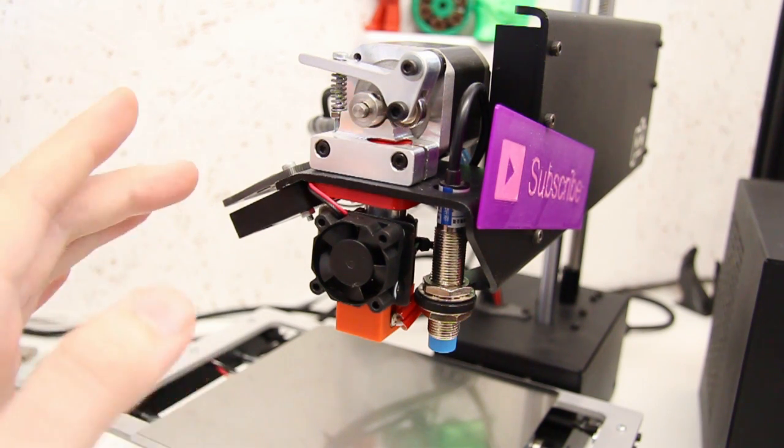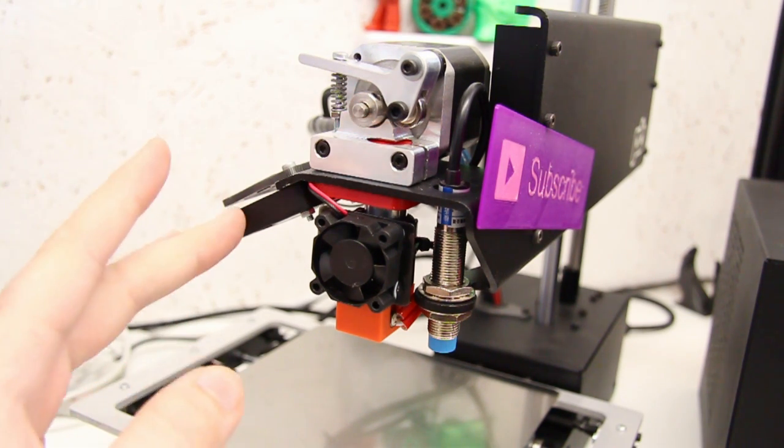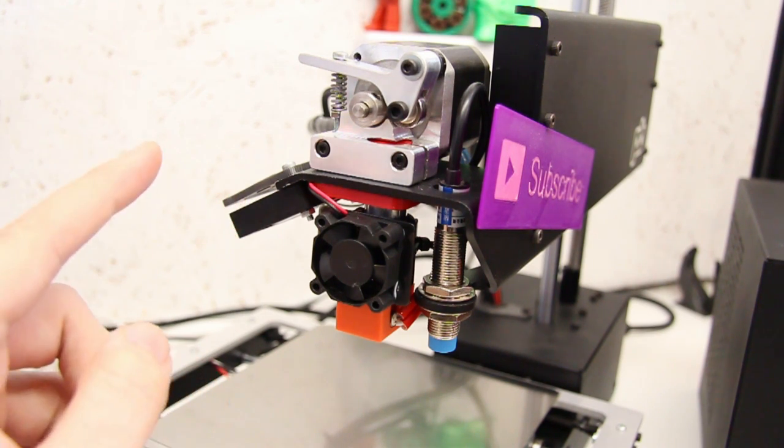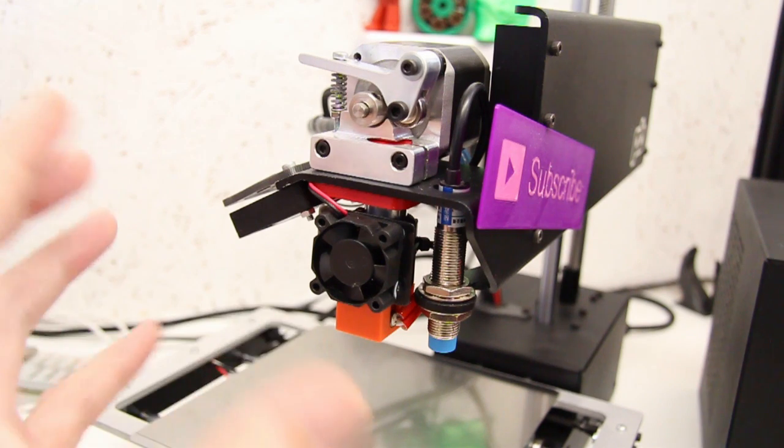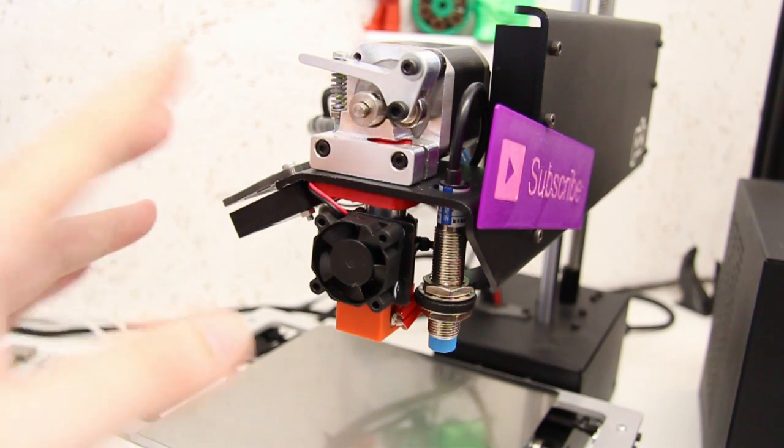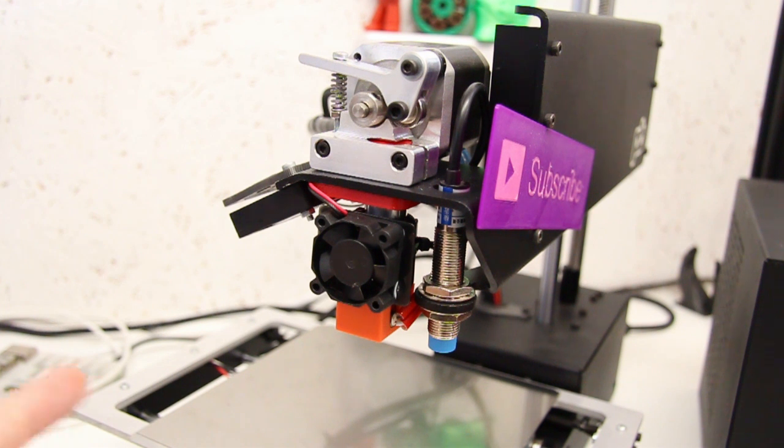This printer is not brilliant in part cooling. It just literally has a fan that blows down onto the build plate. So, it's not directional in any way. But, there are plenty of fan ducts on Thingiverse if you need to do that. So, let me just reposition the camera. And we can have a look at some of the prints I've done with this setup.